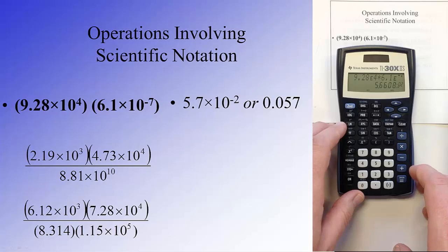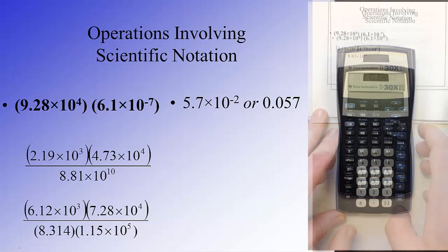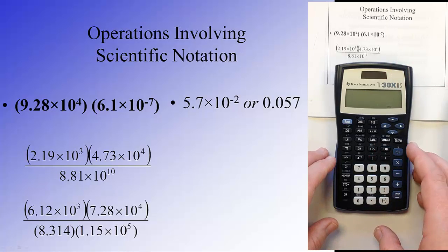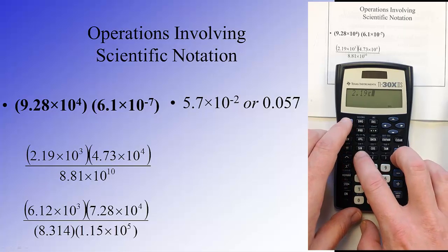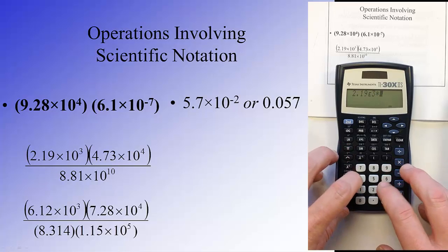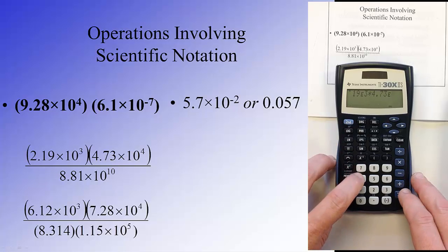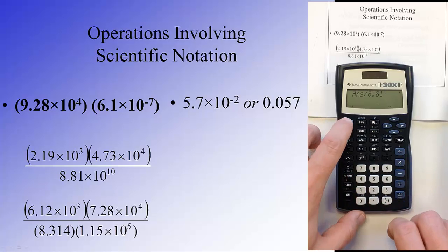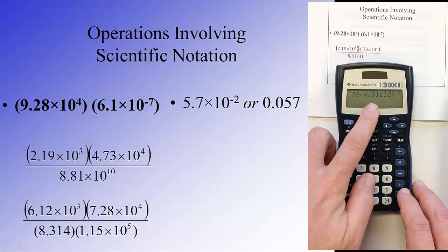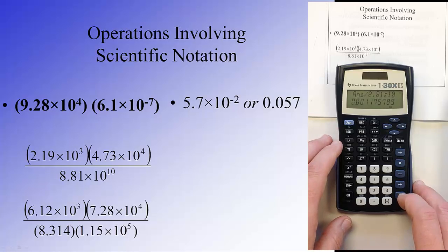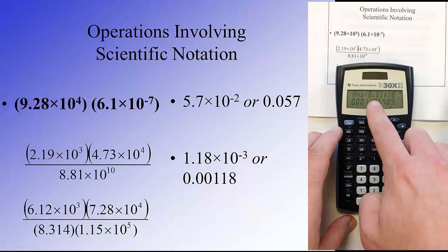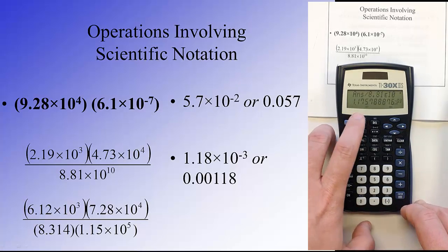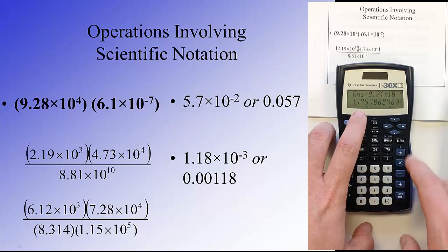Whenever we have a calculation that involves multiple terms, particularly in fraction form, we want to be careful how we input the values. We'll start with 2.19, second EE, third power, times, then we have 4.73, second EE, fourth power. Now we're going to evaluate the numerator, so that's what we get for our numerator. Now we're going to do divide by 8.81, second exponent function, 10th power. So it's going to take that previous answer divided by our denominator, and we see that we would get 0.00118 with three digits based on all of the terms that we had, or if we express that in scientific notation, we'd expect 1.18, again rounded for three significant digits, times 10 to the minus third power.